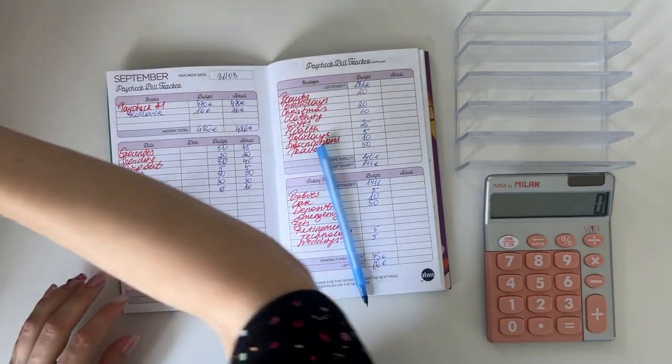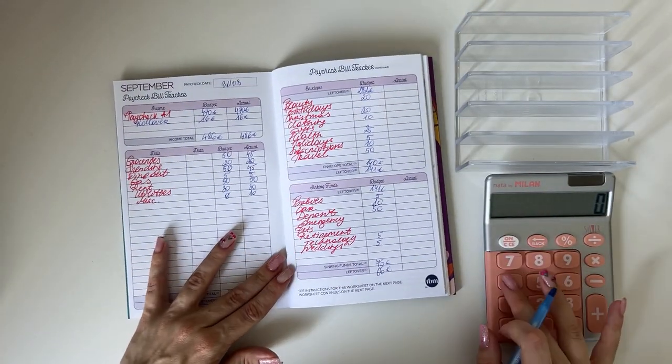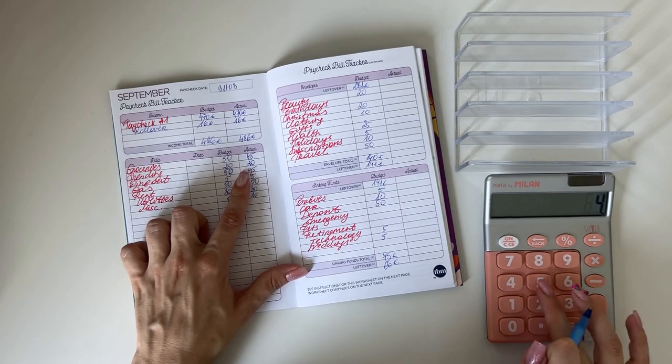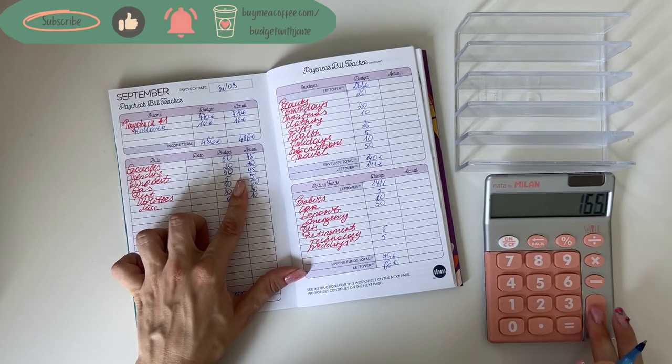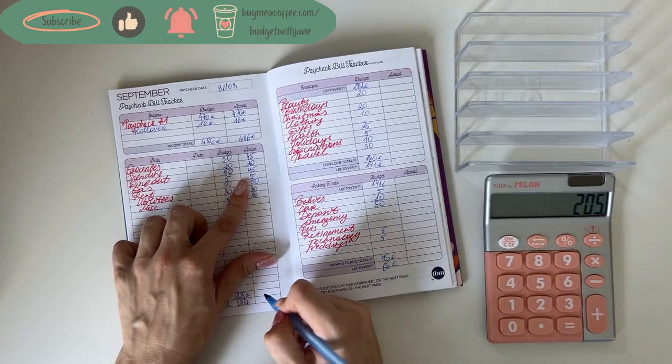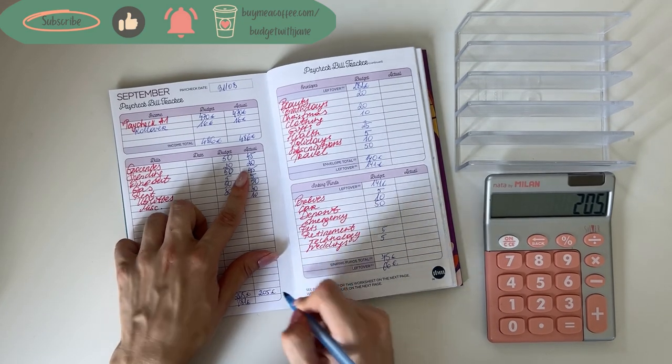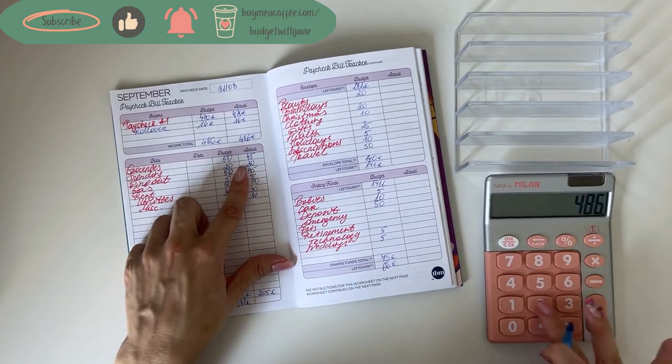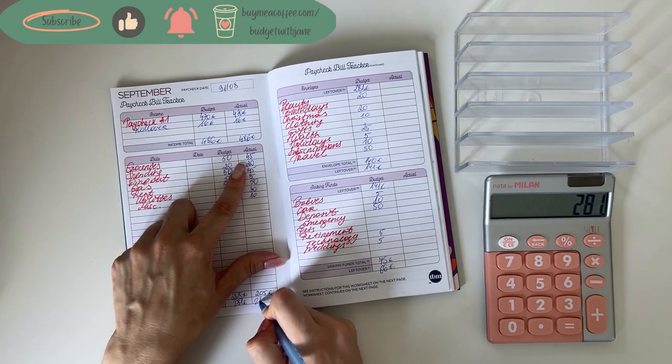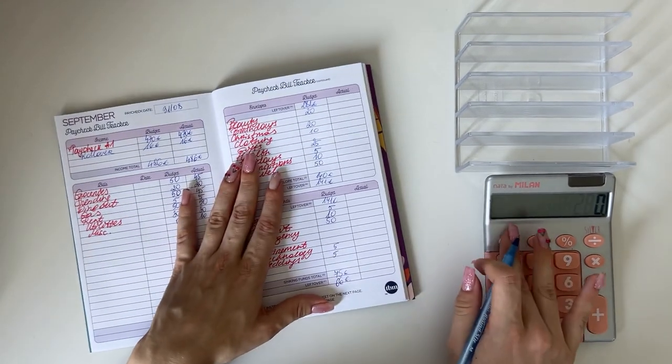Let's write that down. So that was 45 plus 20 plus 45 plus 5 plus 50 plus 30 plus 10, equals 205. 486 minus 205 is 281. So all of the amounts here won't change now.